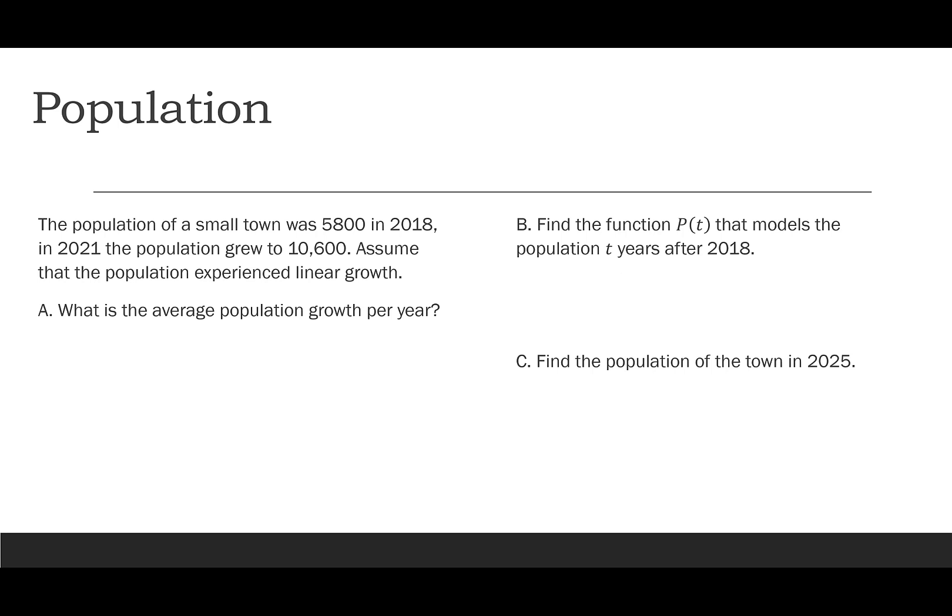So let's look at population. The population of a small town is 5,800 in 2018. In 2021, the population grew to 10,600. So assuming the population experienced linear growth, let's find the average population growth per year. So what do we want to do? We want to look at how did the population change. So 10,600 minus 5,800 shows me how much it changed. And then I want to divide by over what period of time. So 2021 minus 2018. So I hope you see here that this is slope. 10,600 minus 5,800 gives me 4,800. And that was over three years. So that says our change, and I'm going to write that as m, is 1,600. So we're seeing 1,600 more people per year.